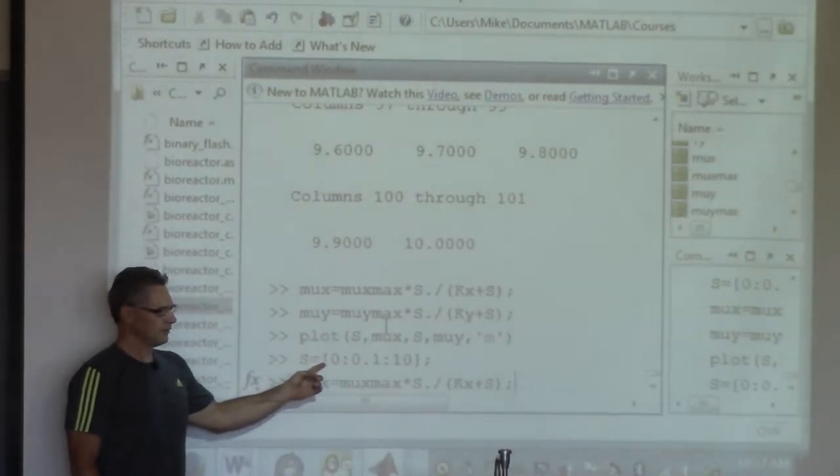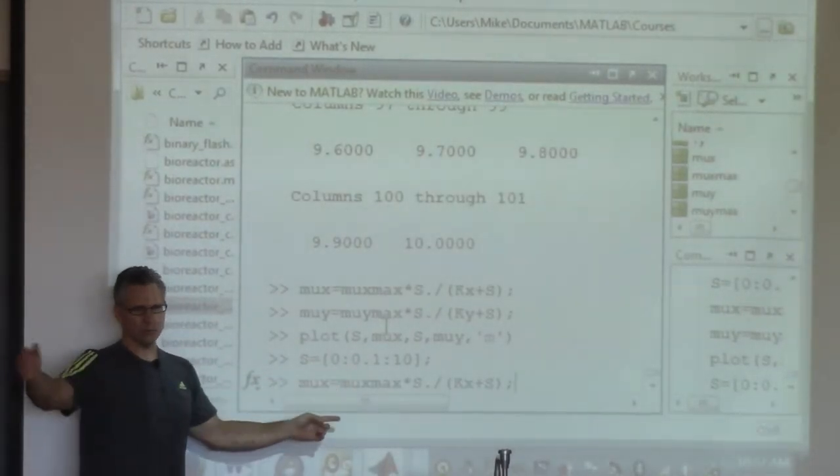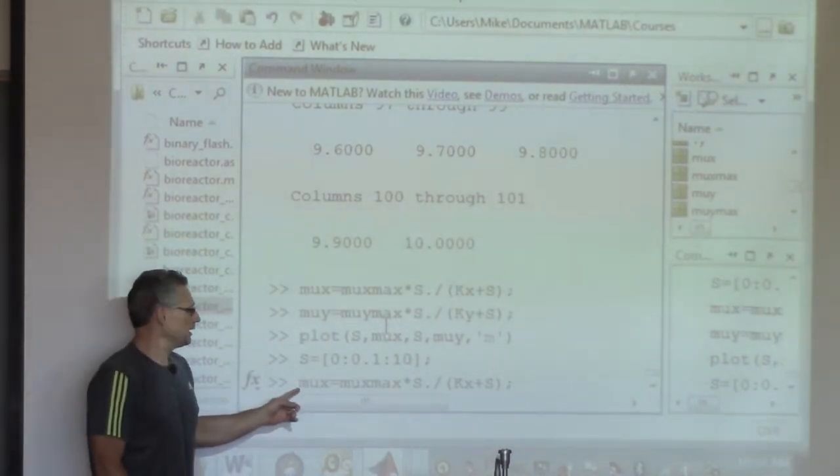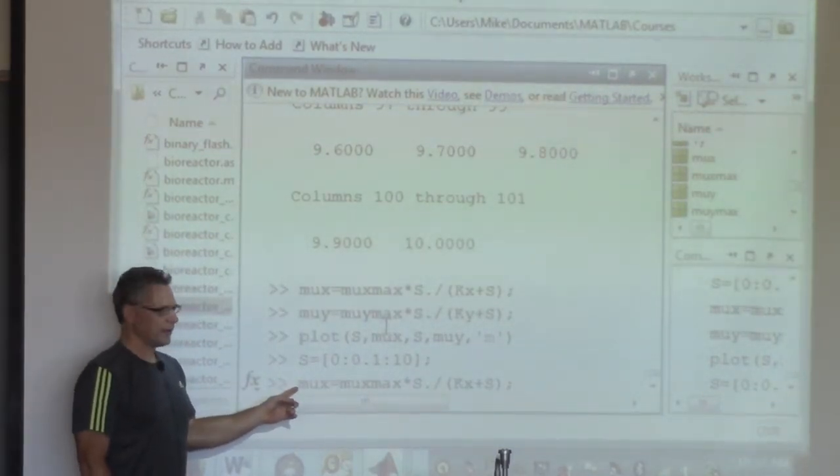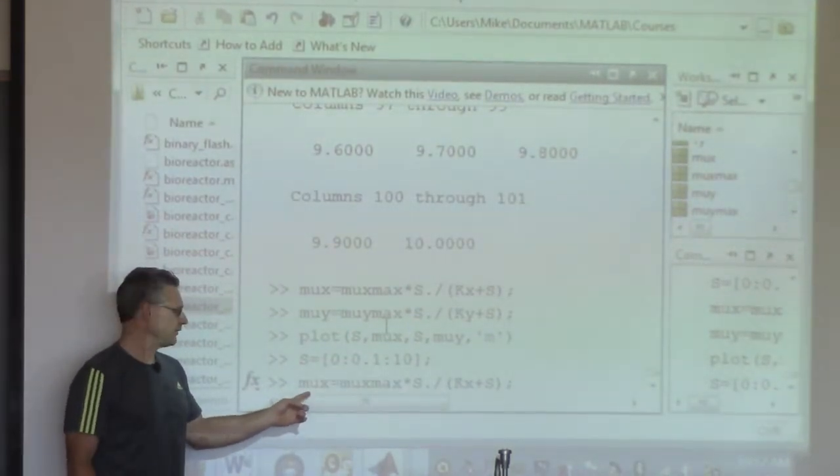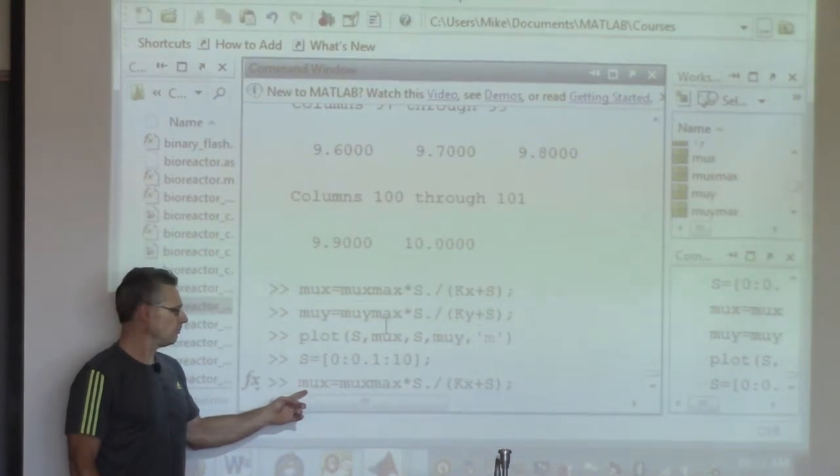So again, this is a vector that starts at 0, ends at 10, and then goes by increments of 0.1. So I can get a nice, smooth curve. Then I calculated the growth rate for the x-type cells for each of these substrate concentrations and put it into a big vector called mu x.